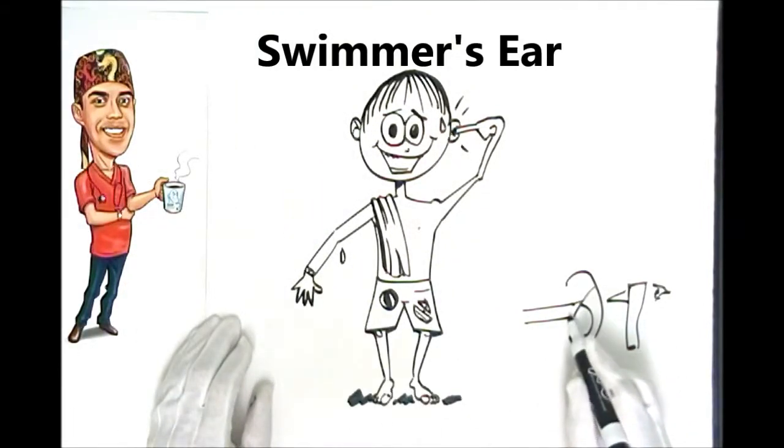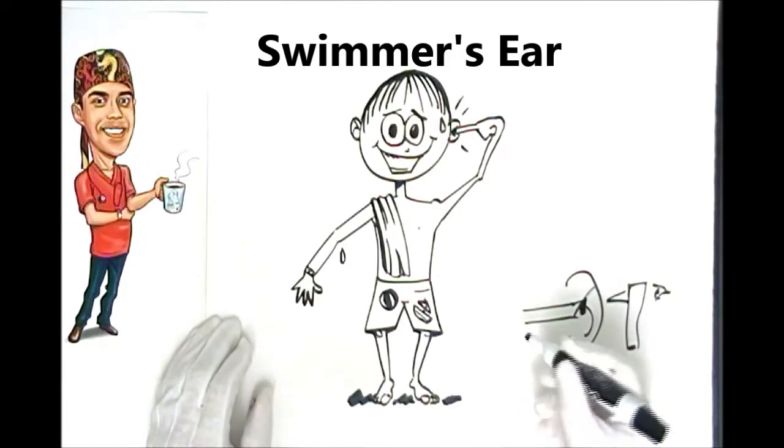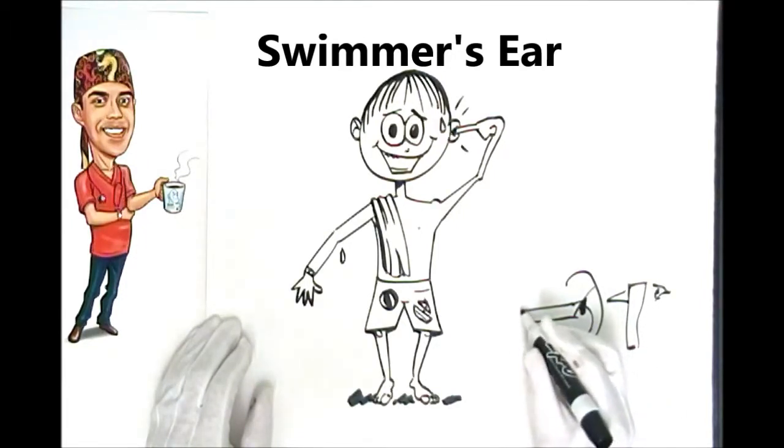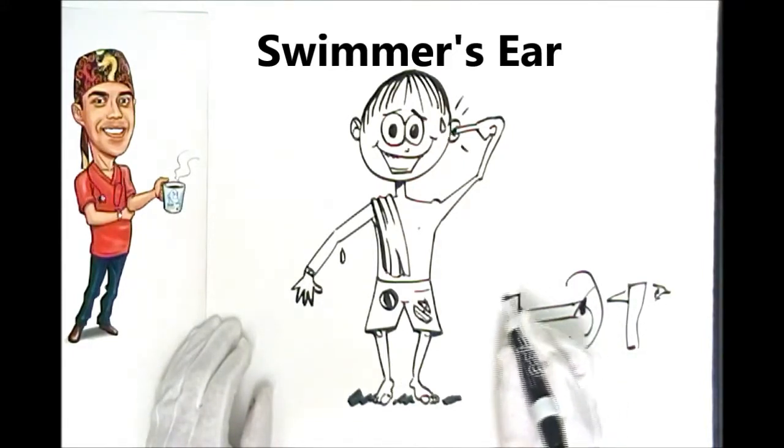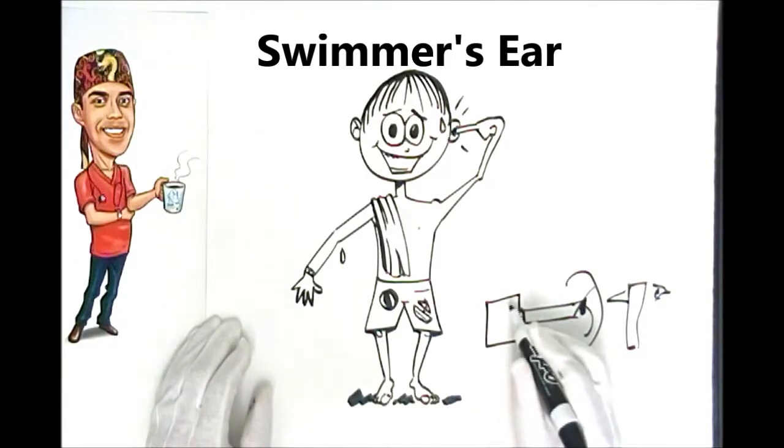So this opens up into the external environment here through what we call the auditory meatus. And at the end of this canal or the Pringles can, there's an eardrum. And the eardrum is sealed from the external world. And then after the eardrum, then you have your middle ear where you have all the bones used in hearing.